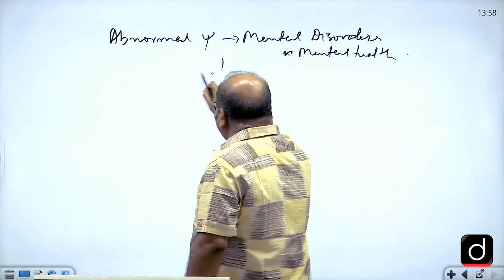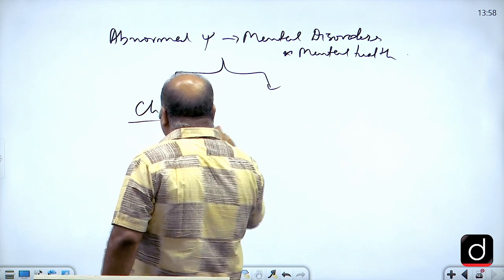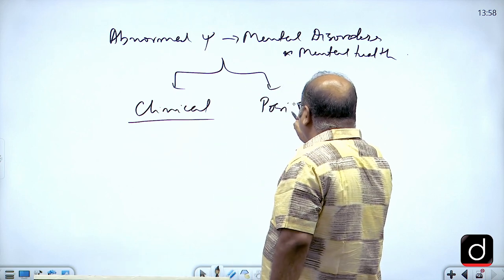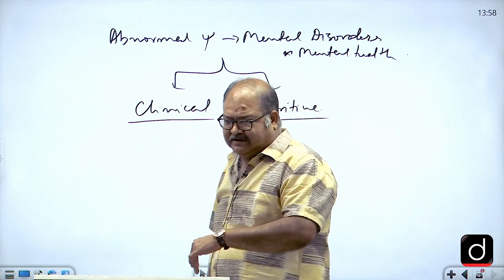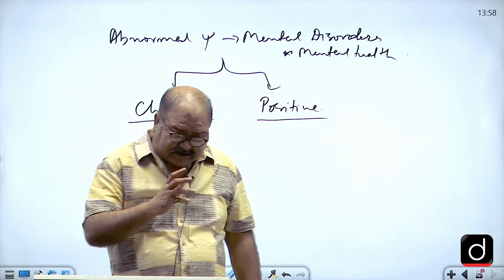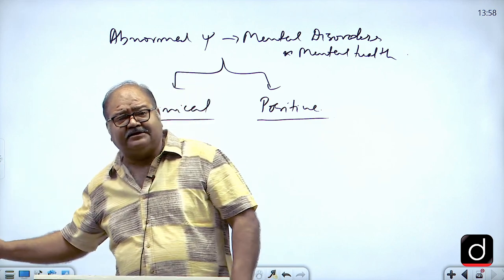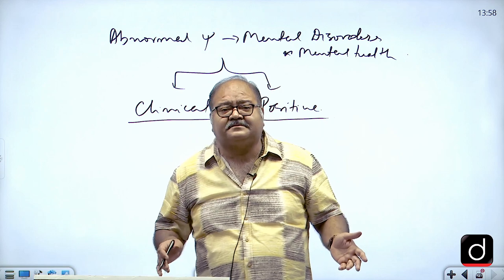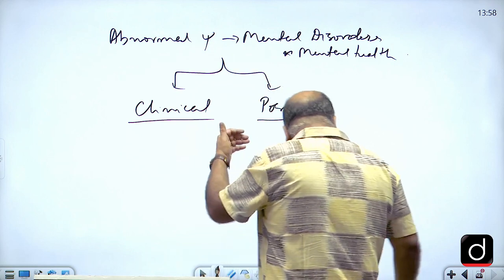Abnormal psychology comprises two sections. One is clinical, dealing with all types of mental disorders. Another is positive psychology, which developed in the 1960s. Positive psychology is not interested in studying abnormal behaviour — it is more interested in making people's lives happier. Clinical psychology would tell you how to absorb greater stresses in life; positive psychology will tell you how to get rid of stresses. It tries to make a healthy person healthier.